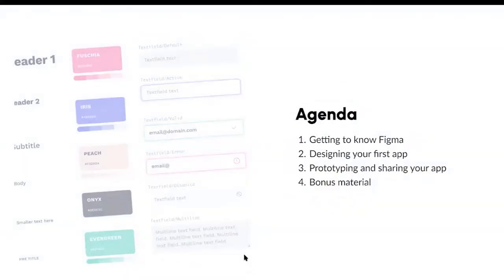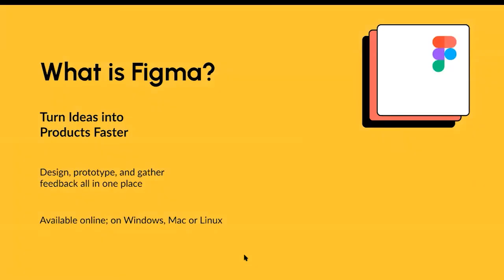Therefore it's very important for us to communicate and test our ideas very early, even before implementing them. Today's session is broken into a few sections: first I'll talk about what Figma is, then do a demo on how to create your first app with prototyping and sharing, and lastly there is bonus material to elevate your designs. In short, Figma is a prototyping tool that helps you turn ideas into products faster — without any coding, and without needing to be a designer. Anyone with zero design knowledge can use it.